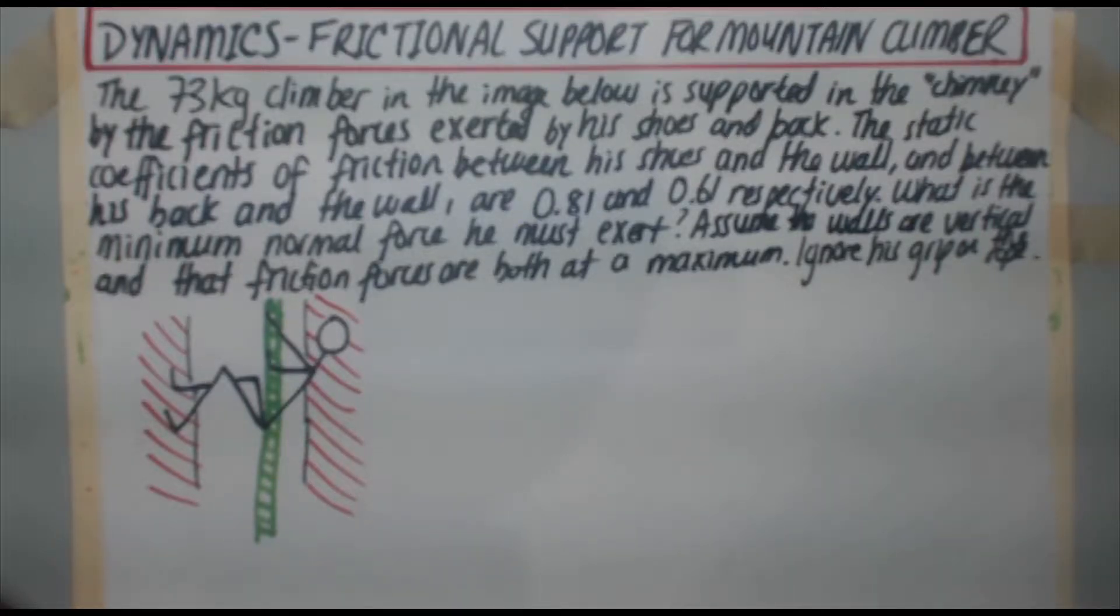What is the minimum normal force he must exert? Assume the walls are vertical and that friction forces are both at a maximum. Ignore his grip on the rope.